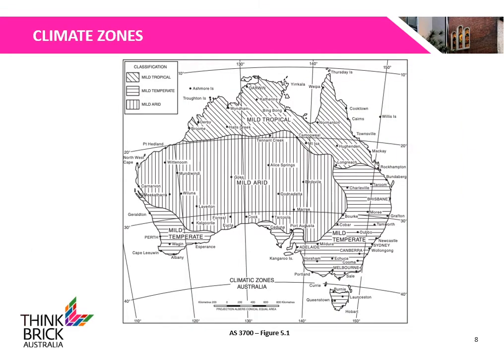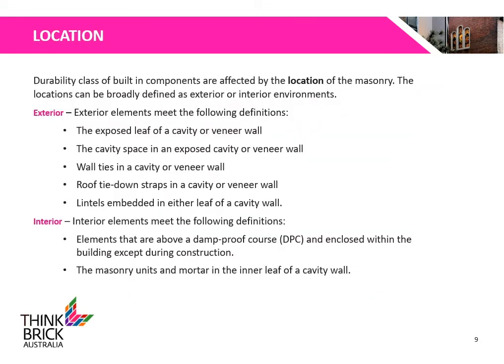Figure 5.1 of AS3700 is a map of Australia that outlines the climate zones for different cities. We will use this figure as a component to determine the durability requirements for the wall ties. The location of masonry will also affect the durability requirements for built-in components.